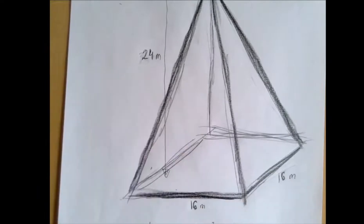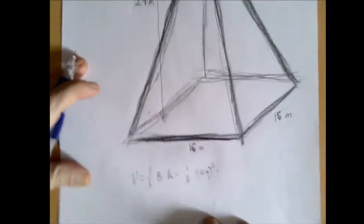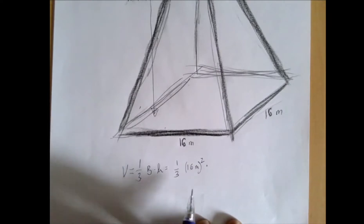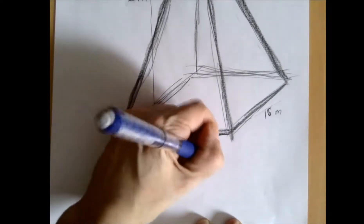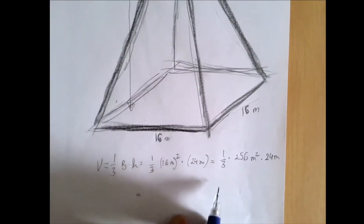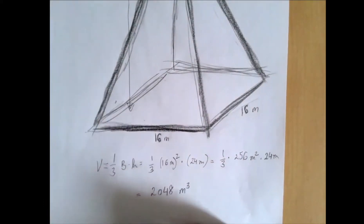So then everything doubles, and so the height is 24 meters. And then we have everything that we need for the volume. The volume of this bigger object is 1/3 times base area times height, where the base area is the square of 16 meters and the height is 24 meters, which is 1/3 times 256 square meters times 24 meters, which is 2048 cubic meters.